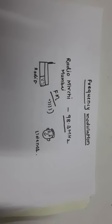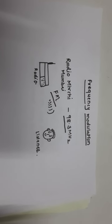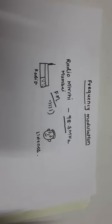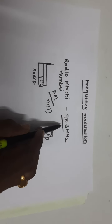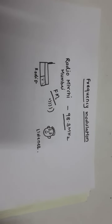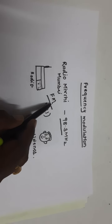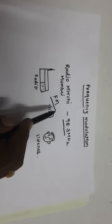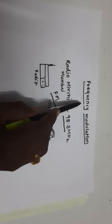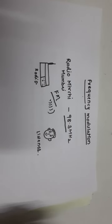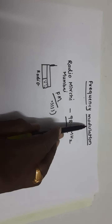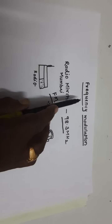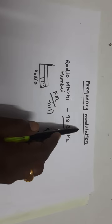After listening to this lecture, you will be capable of answering the full form of FM and the definition of FM, and we can also easily get the answer about what 98.3 means. FM is nothing but frequency modulation. Now the question arises: what exactly do we mean by modulation? So let us first clear the concept of modulation, and once we understand it, we will move towards frequency modulation.